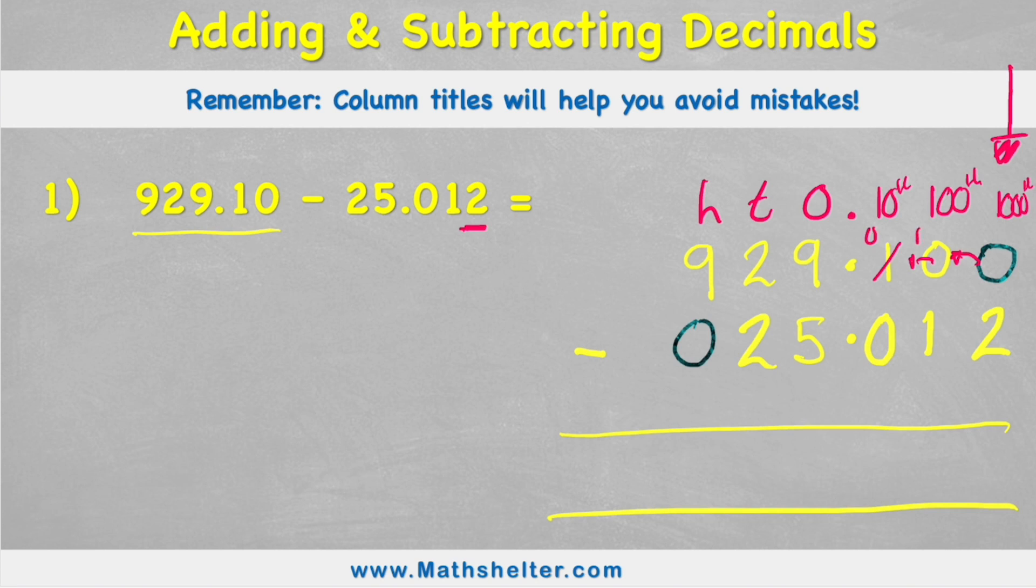Now I'm going to start again and say, right, look in my smallest value, my thousandths column, and my question still says zero subtract two, which I can't do. But now this time when I look next door, I can see there's now a ten, because remember this is now a ten in the hundredths column. Put it down to a nine and borrow that whole ten across. Wow, look how complicated this little area here looks - looks pretty gross, doesn't it? So we've got to be really careful now not to make any mistakes.